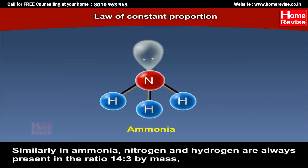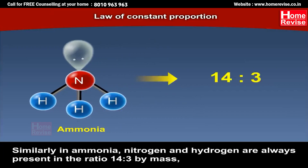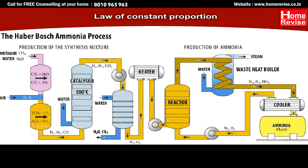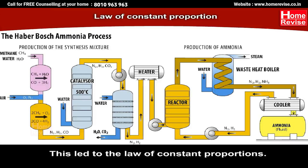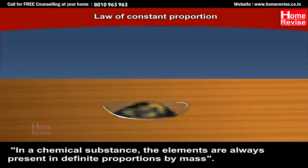Similarly, in ammonia, nitrogen and hydrogen are always present in the ratio 14:3 by mass, whatever the method or source from which it is obtained. All these observations led to the law of constant proportions, which states that in a chemical substance the elements are always present in definite proportions by mass.